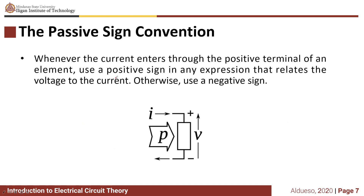Before we proceed to solving circuits, let's follow a convention. For this subject, we will follow the passive sign convention. Whenever a current enters through the positive terminal of an element, use a positive sign in any expression that relates the voltage to the current. Otherwise, use a negative sign.